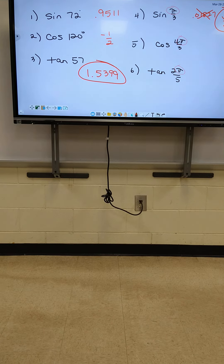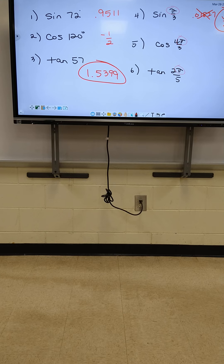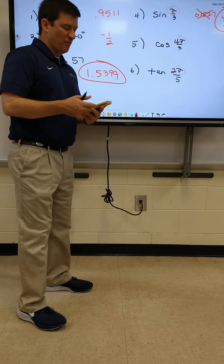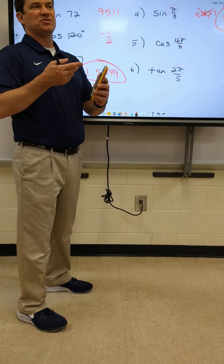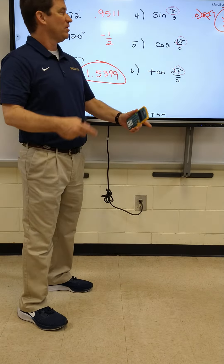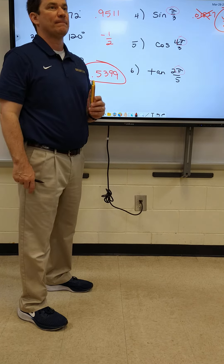If you don't put it in radian mode, you're going to miss four, five, and six on the test. It's in radian mode — it says RAD at the top. Now type in number five the same way you typed in number four. It will stay in radian mode unless you change it back to degree mode.